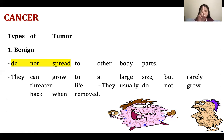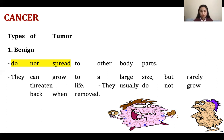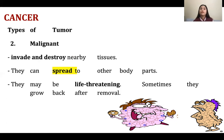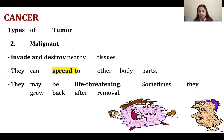Tumor has two types. The first one is benign tumor. Benign tumor doesn't spread to the other parts of the body. They can grow to a large size but rarely threaten life, and they usually do not grow back when removed. The opposite is malignant. Malignant tumors invade and destroy nearby tissues, they can spread to other body parts, are usually life-threatening, and sometimes grow back after removal.